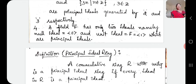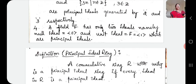One theorem we also proved: the ideals of a field — the field has only two ideals. The field itself is an ideal, and the singleton set {0} is the null ideal. Those are the only ideals. This field F has only two ideals, namely the null ideal and the unit ideal, which are principal ideals.